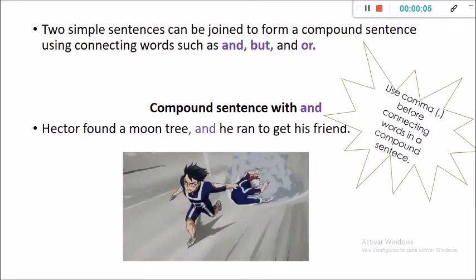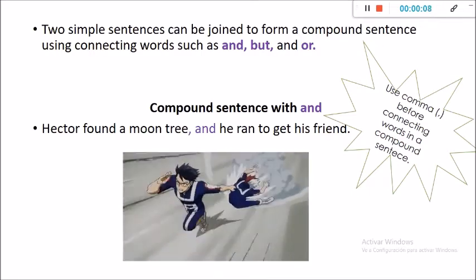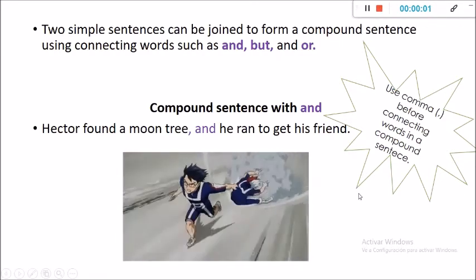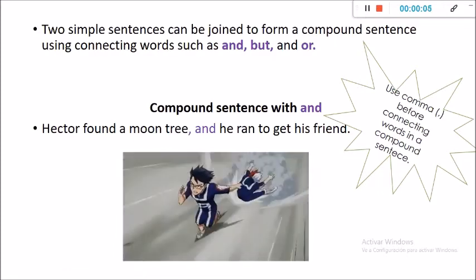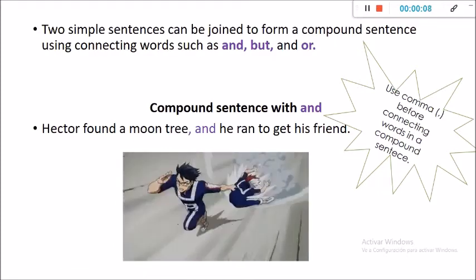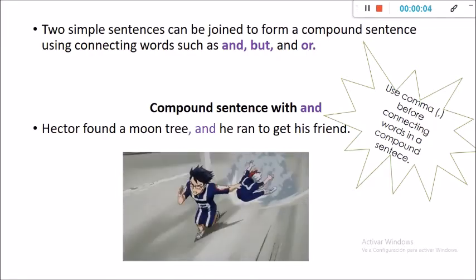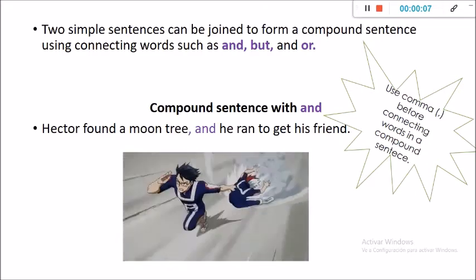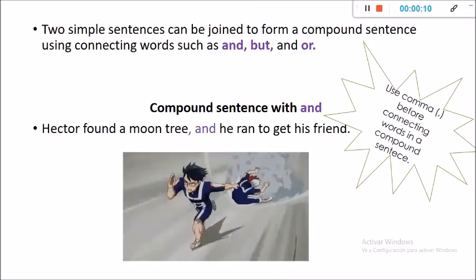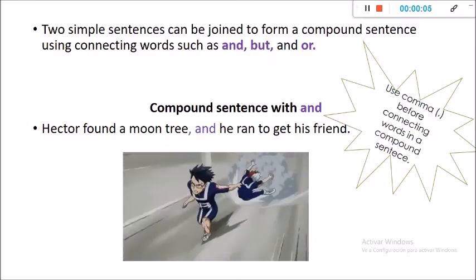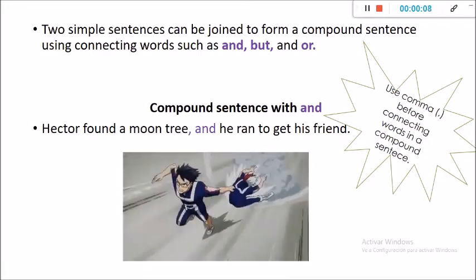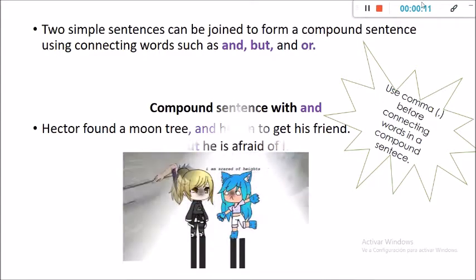Compound sentences with and. Enunciados completos con la palabra o el conector and. Hector found a moon tree and he ran to get his friend. Use a comma before connecting words in a compound sentence. Hector found a moon tree, and he ran to get his friend.